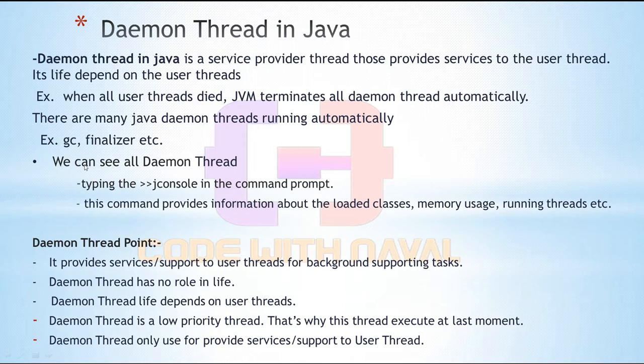Let's see key viewpoints related to Daemon threads. It provides a service, or support, to user threads for background supporting tasks. Daemon thread has no role in its own life — its life depends on the user thread. Daemon thread is a low priority thread, that's why it executes at the last moment. Daemon thread is only used to provide service to the user thread; it doesn't have its own purpose or its own life.